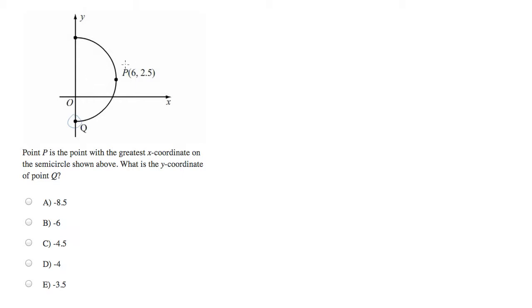Now, we know the coordinates of point P, and we know that point P is on a semicircle, and point P is the rightmost point on that semicircle.